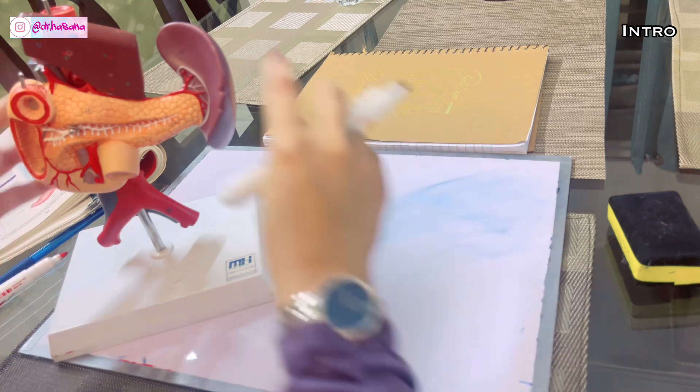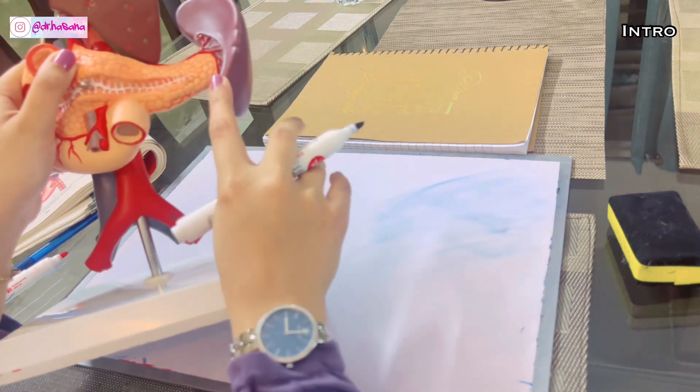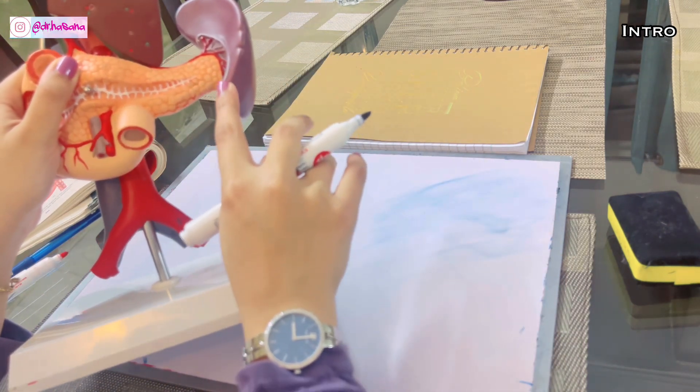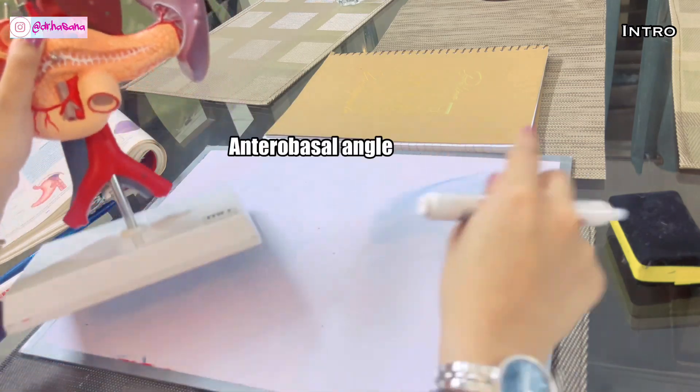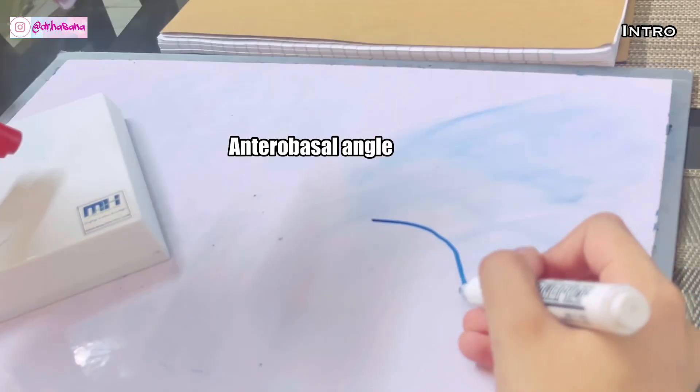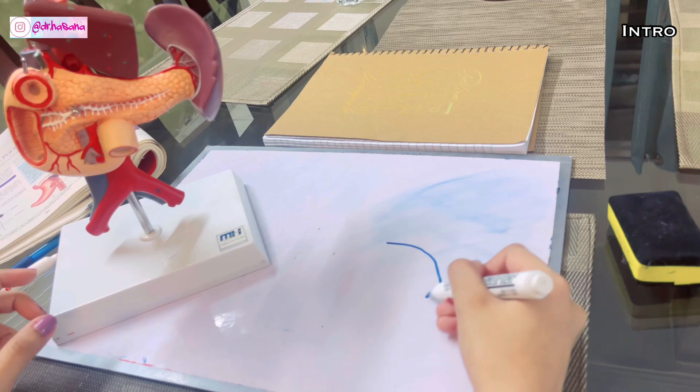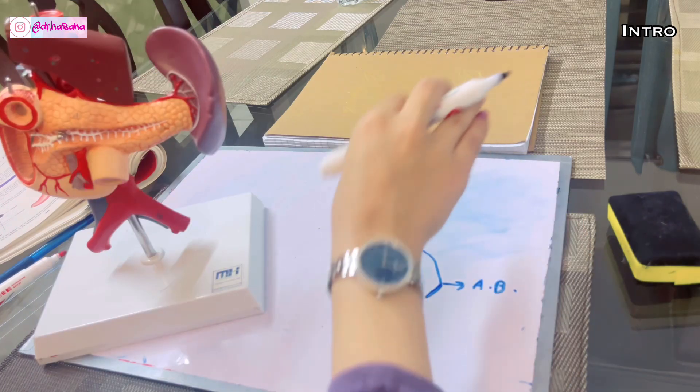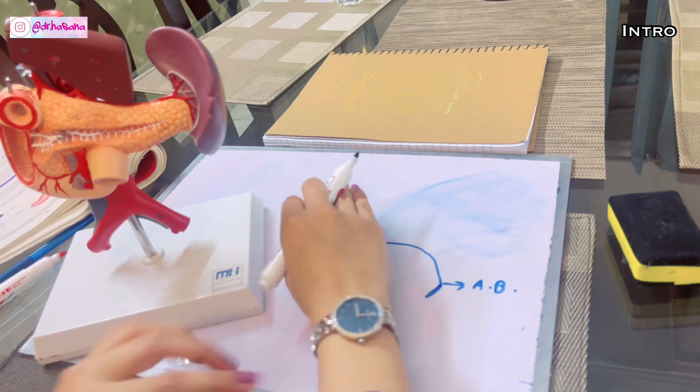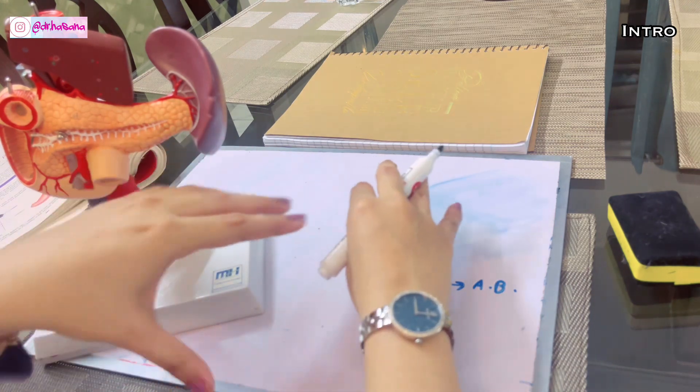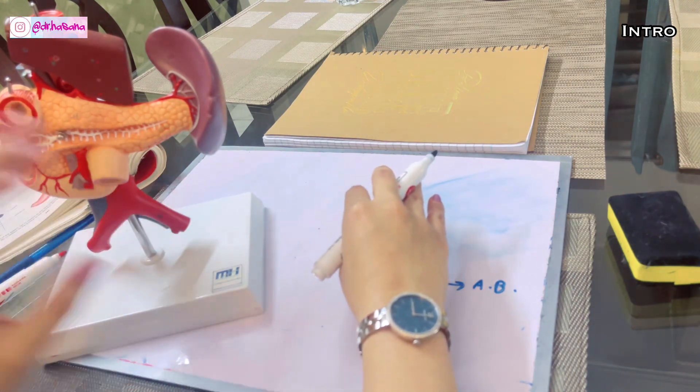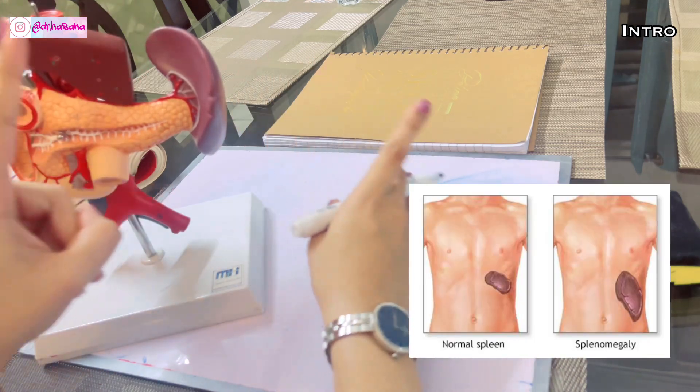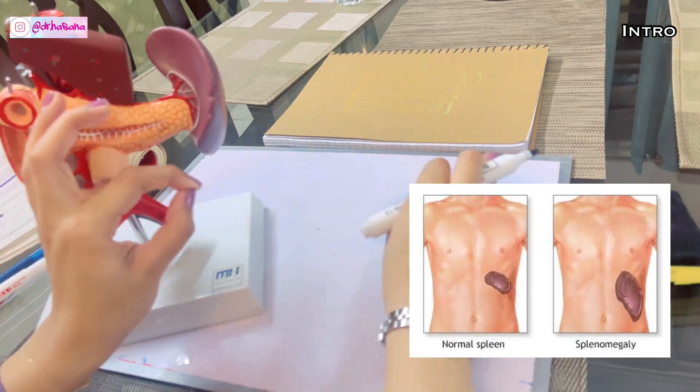The angles of the spleen, where the superior border is meeting the anterior end, this angle is known as the anterosuperior angle of the spleen. The importance of this angle is that spleen in a normal individual is not palpable. You cannot palpate it on examination.